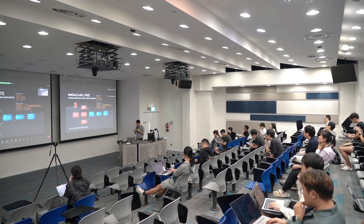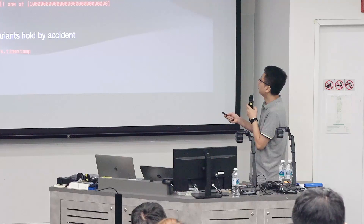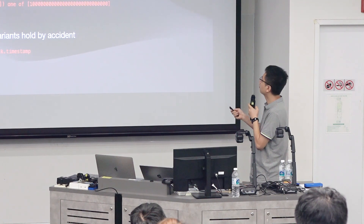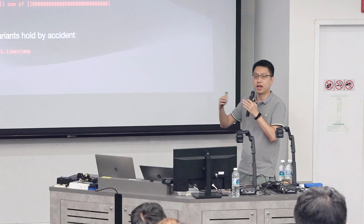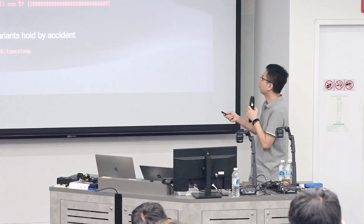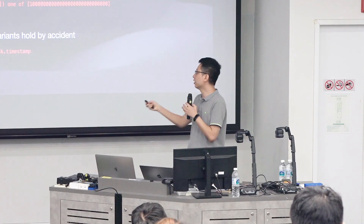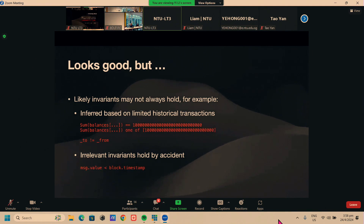To solve that issue, I'm going to introduce another technique called InfCon+. Some invariants may not always hold — for example, if they're only inferred from limited historical transactions, cases that haven't happened yet won't be captured. For instance, the sum of balances can be a particular value, but if a new user deposits additional tokens the value changes. There can also be irrelevant invariants that hold purely by accident, such as 'message value is less than the timestamp value.'